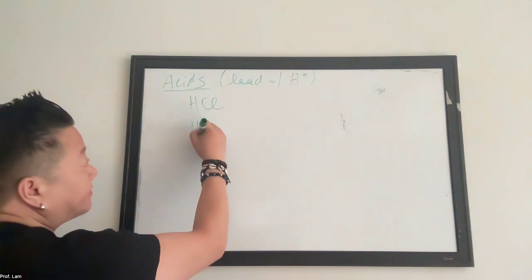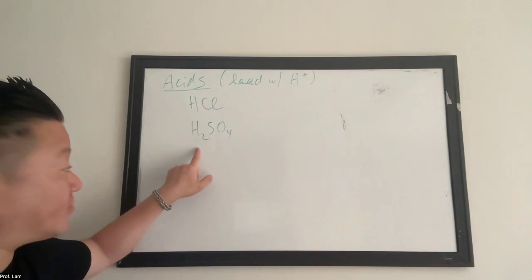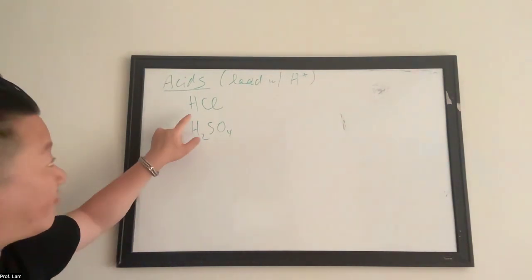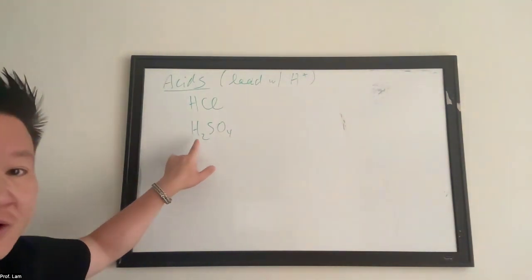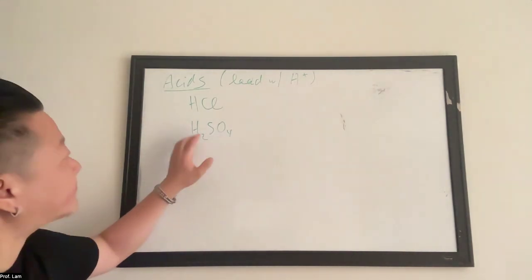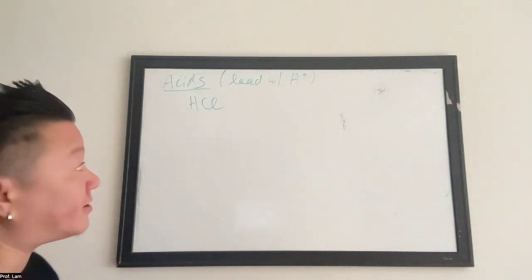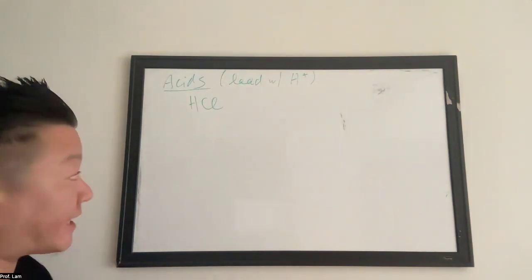In H2SO4, because the sulfate is 2 minus, that's why you need the two protons. So however many protons are in front, it needs to balance out the anion. We have the HCl. This we call hydrochloric acid.